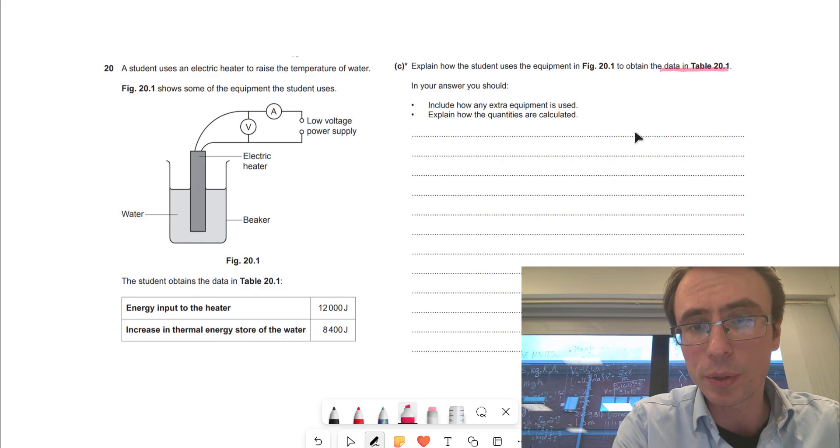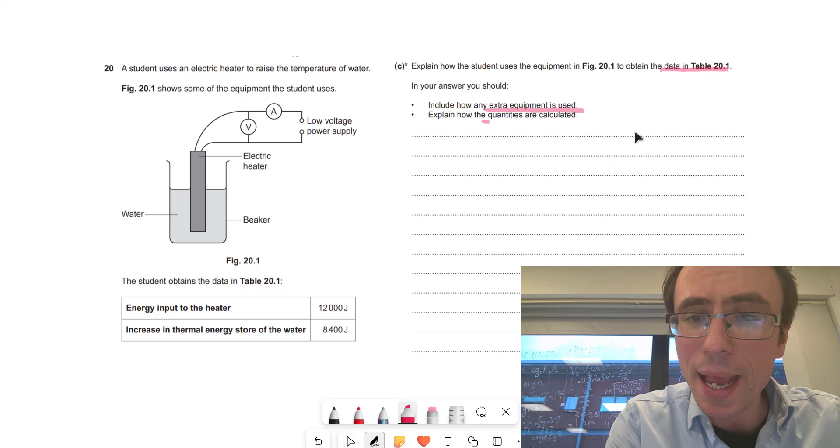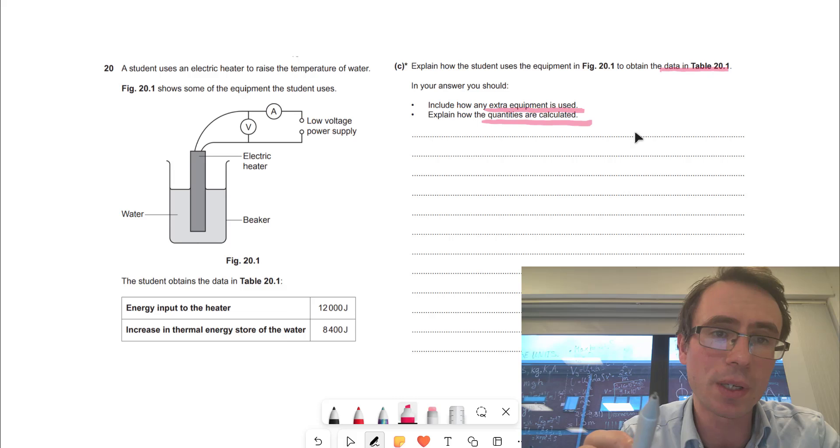They're also telling us what they want: include any extra equipment which is potentially used, and explain how the quantities are actually calculated.